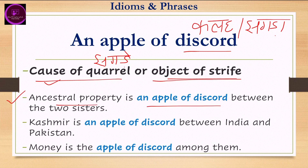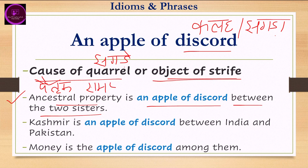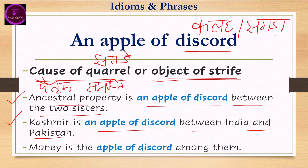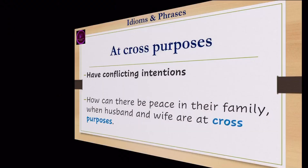Example: 'Ancestral property is an apple of discord between the two sisters.' Ancestral property means 'pitrik sampatti.' Second example: 'Kashmir is an apple of discord between India and Pakistan' — meaning Kashmir is the object of strife between them. Third example: 'Money is the apple of discord among them.'